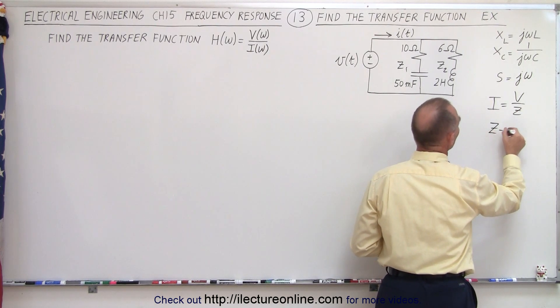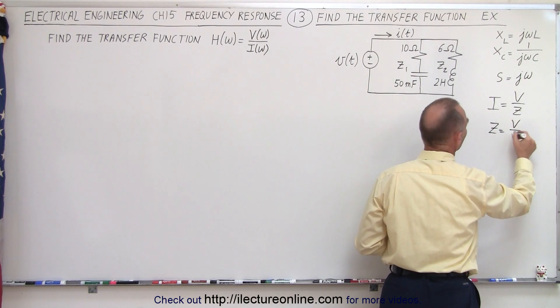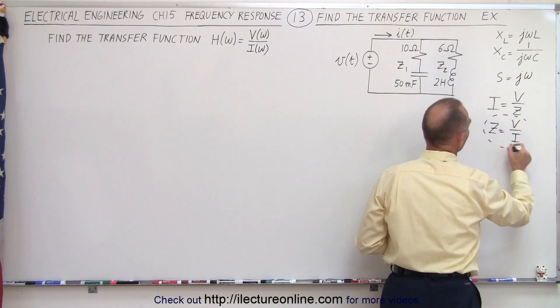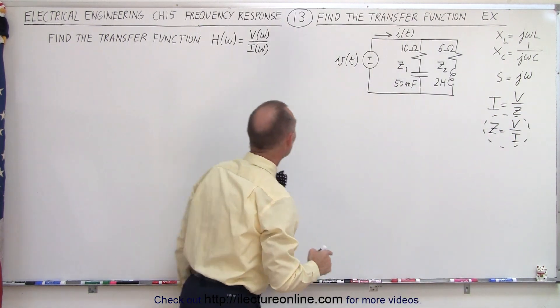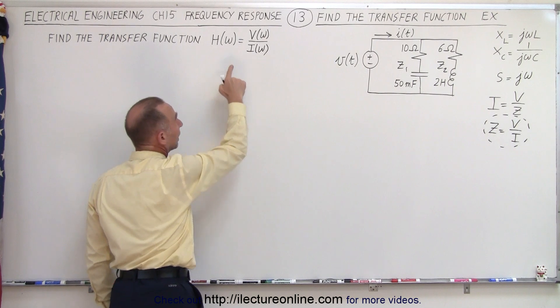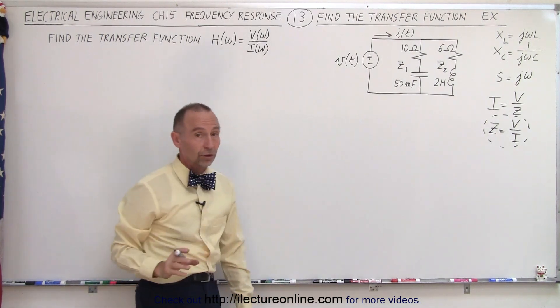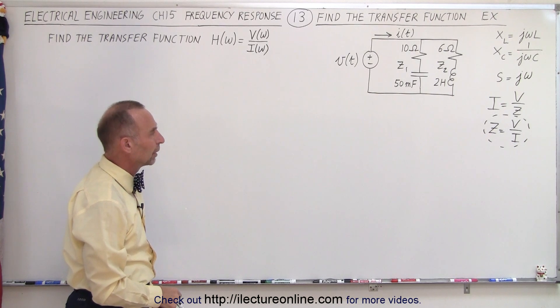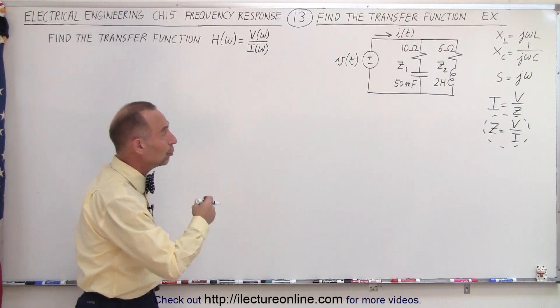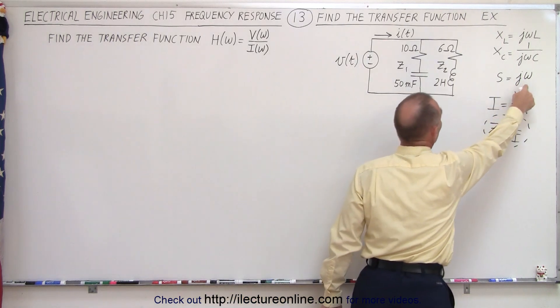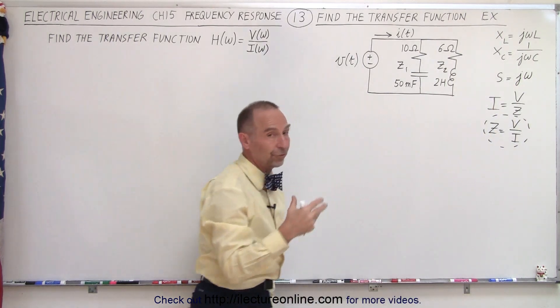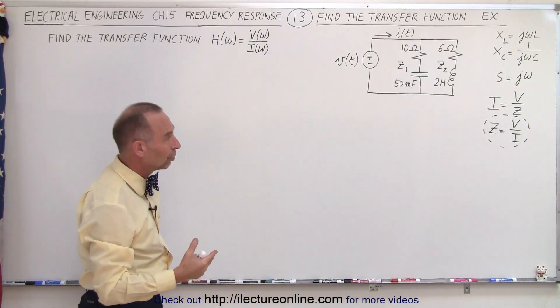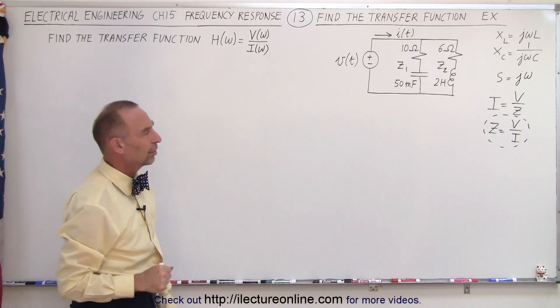Which means that the impedance is equal to the voltage divided by the current. In other words, in this example right here, the transfer function we're looking for is equal to the impedance of the circuit as a function of the frequency omega. So, all we have to do is find the impedance and then use the conversion from S equals J omega to find the transfer function, which will then give us the poles and the zeros.